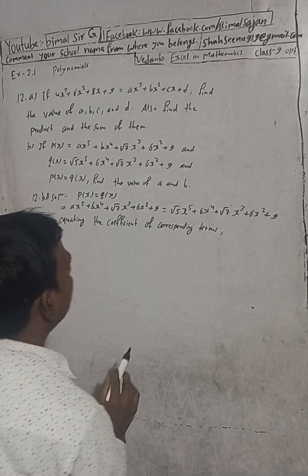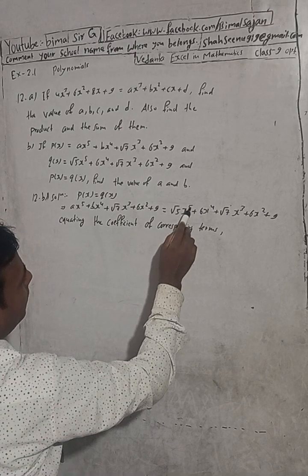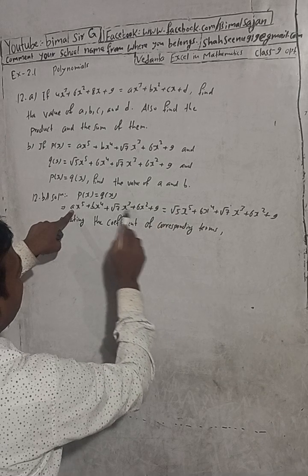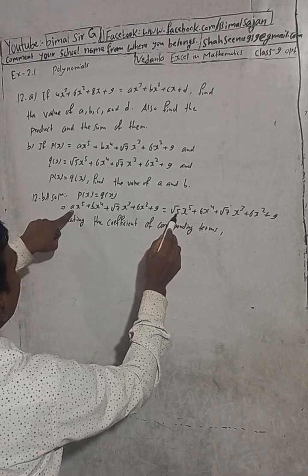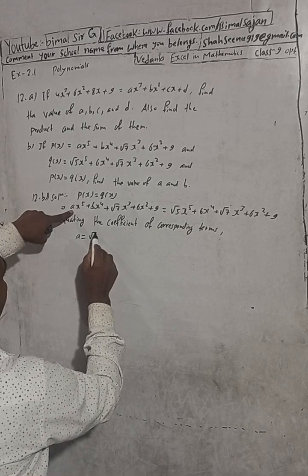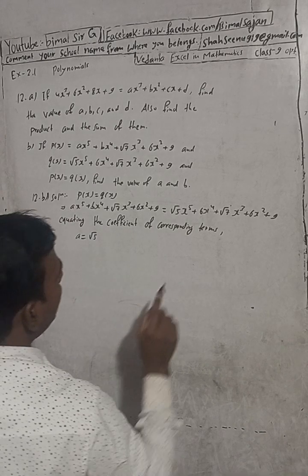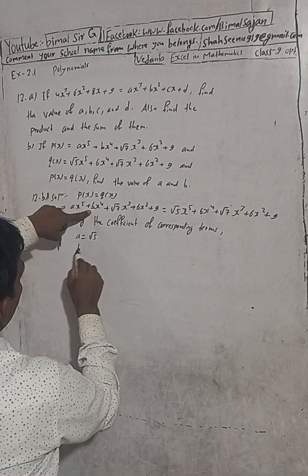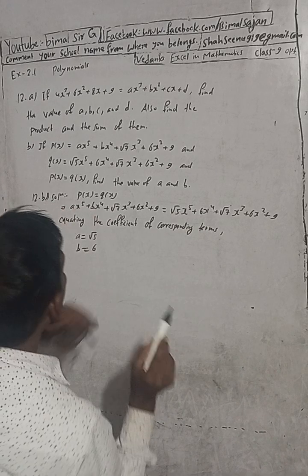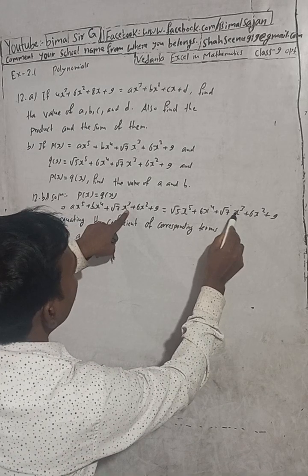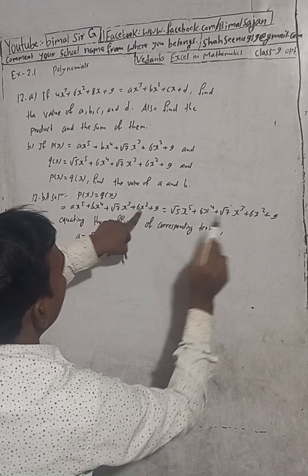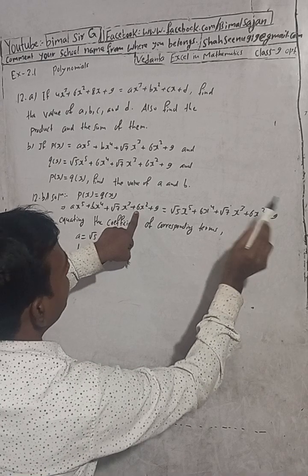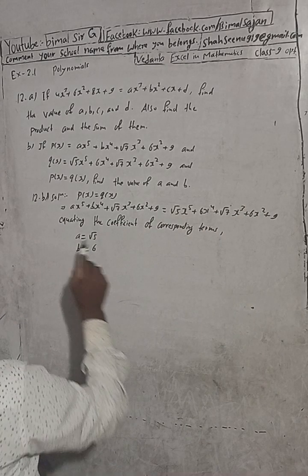Equating the coefficients of corresponding terms: the highest power is x⁵. The coefficient on the left is a and on the right is √5, so a = √5. For x⁴: coefficient on left is b and on right is 6, so b = 6. For x³: both sides have √7, which is consistent. For x²: both sides have 6, and the constant terms are both 9.